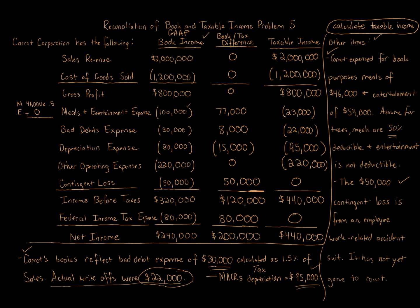This is another way to look at what we did in the previous problem. In that one, I showed you how to just make the adjustment and get to the taxable income item — more of a shortcut. Here you're seeing the full approach: what taxable income looks like column by column starting with sales revenue, comparing it to book income, and seeing how each line changes. Make sure you go through all these problems together — very helpful to understand the big picture of what's going on.